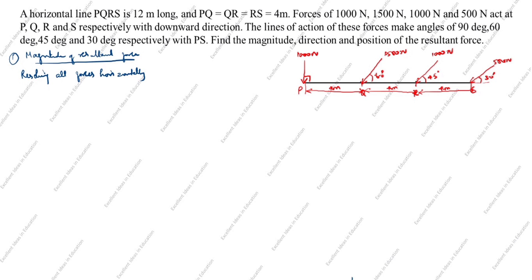The first force is vertical; the second, third, and fourth are inclined. So we need to resolve these forces into their vertical and horizontal components. The arrow comes downward, so the angle is on this side — the angle side is always cosine, and the other side is sine.